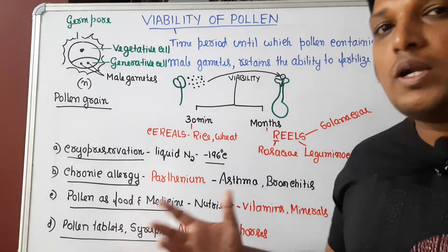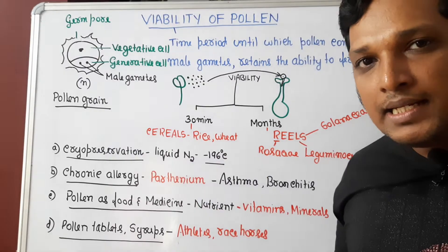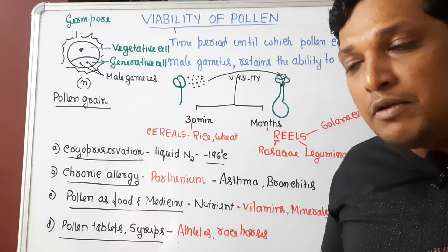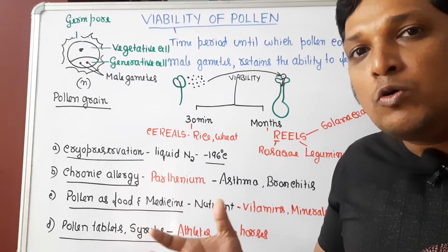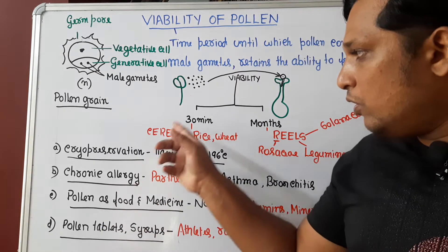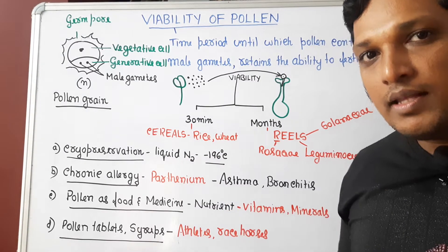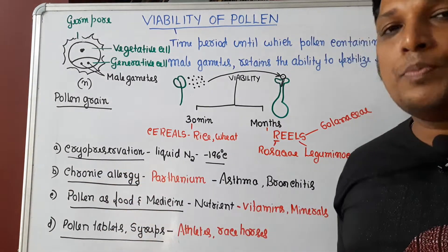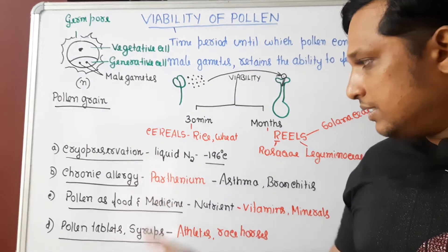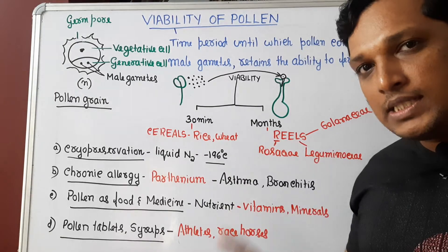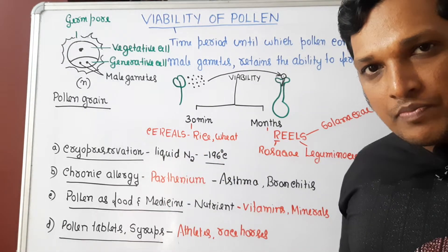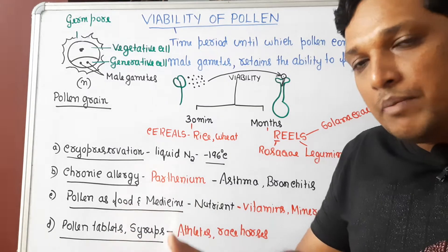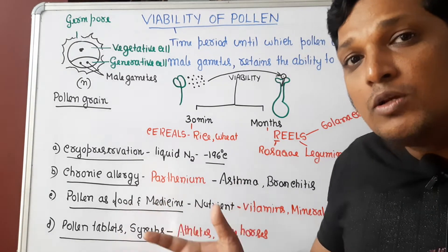Since pollen grain contains sperm, you can preserve it to prevent it from losing viability. For example, if you want to store pollen of rice, keeping it beyond 30 minutes may cause it to lose viability. The technique used is called cryopreservation — you use liquid nitrogen at a temperature of minus 196 degrees Celsius to store the pollen grain for many days to many months without losing viability.